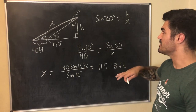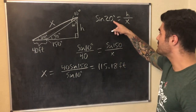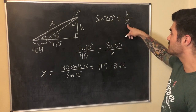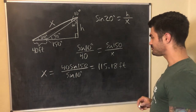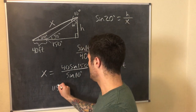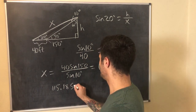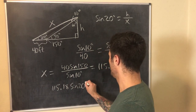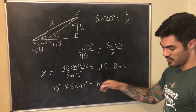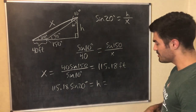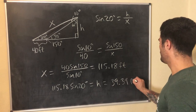Now that I have x I can find h using the right triangle. Sine of 20 degrees equals h over x, so h equals x times sine of 20 degrees, which is 115.18 times sine of 20 degrees. Punching that in gives h equals 39.39 feet — that is the height of the tree.